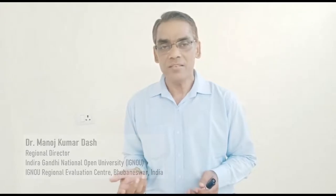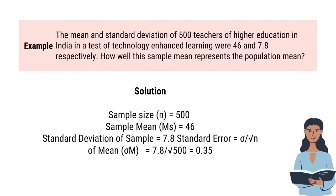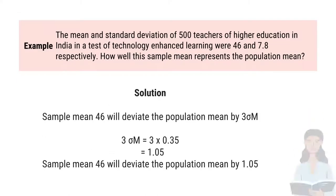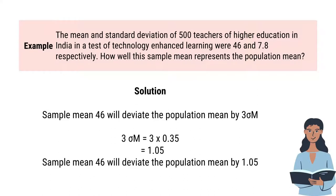The sample size is 500. The sample mean is 46. Standard deviation of the sample is equal to 7.8. Standard error is equal to sigma divided by root n, which is equal to 7.8 divided by root 500, which is equal to 0.35.